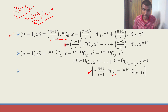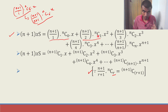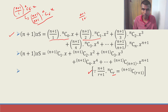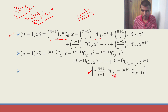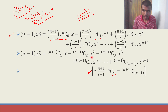Now let us consider one more term: (n+1) by 2 into nC1. I can write this as (n+1) by (1+1) into nC1 — here r is 1, so it matches the pattern. So I would get (n+1)C(r+1) = (n+1)C2. Likewise for the next term, (n+1) by (2+1) into nC2 gives (n+1)C3.